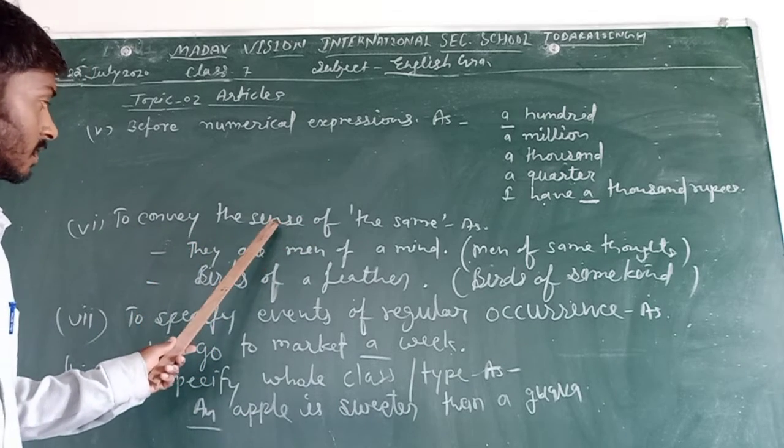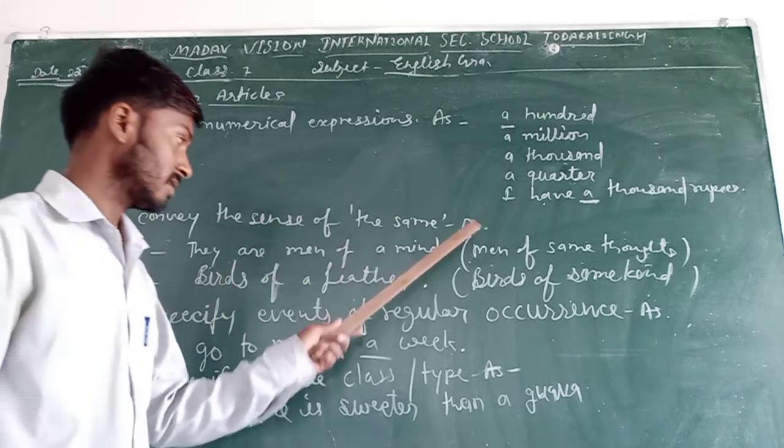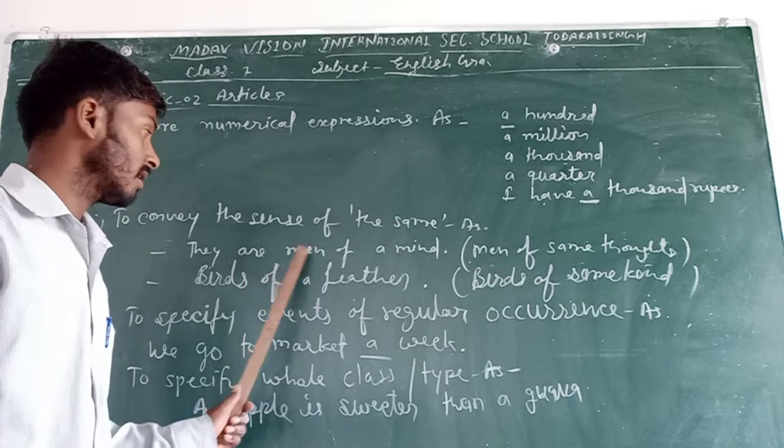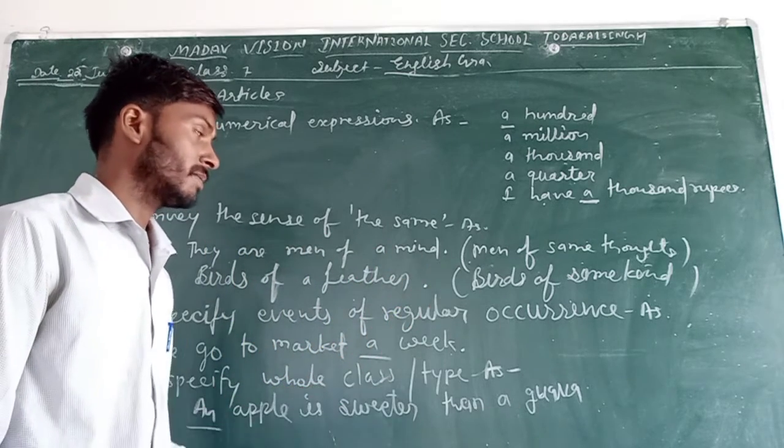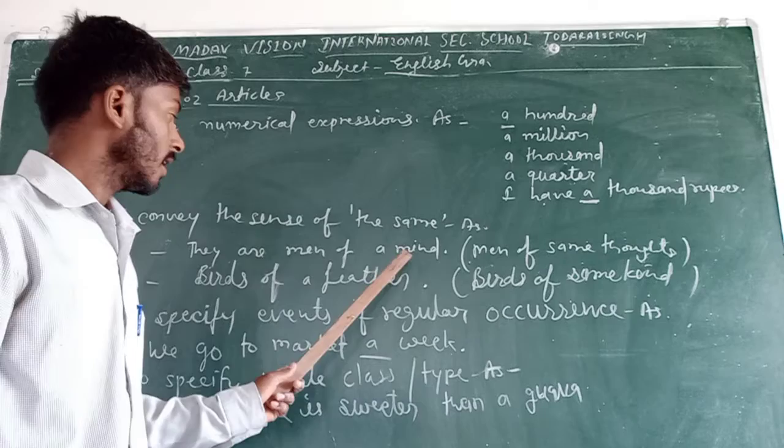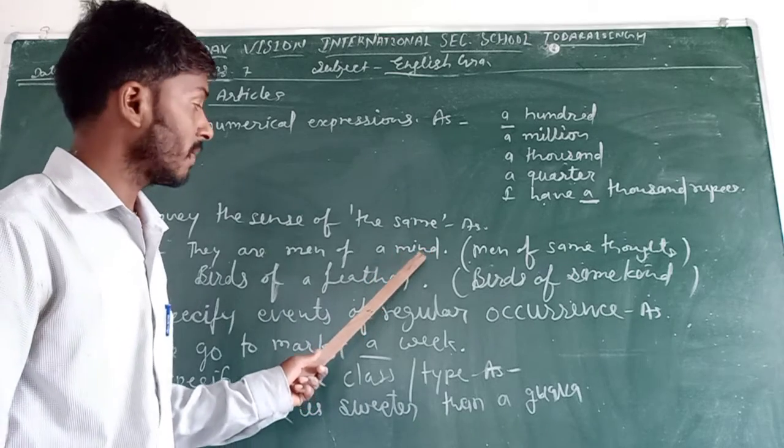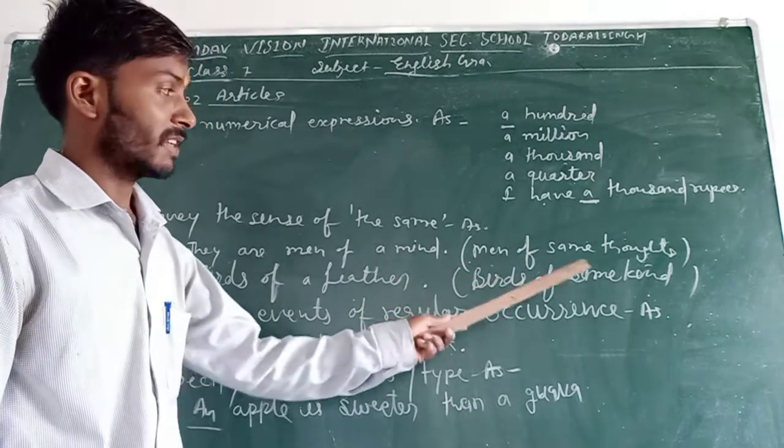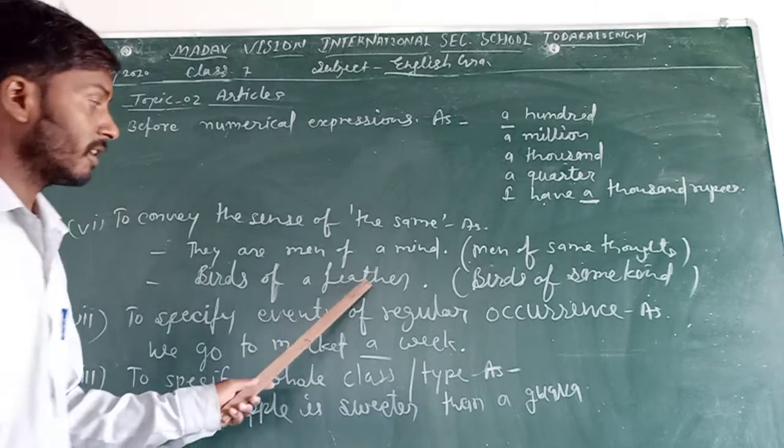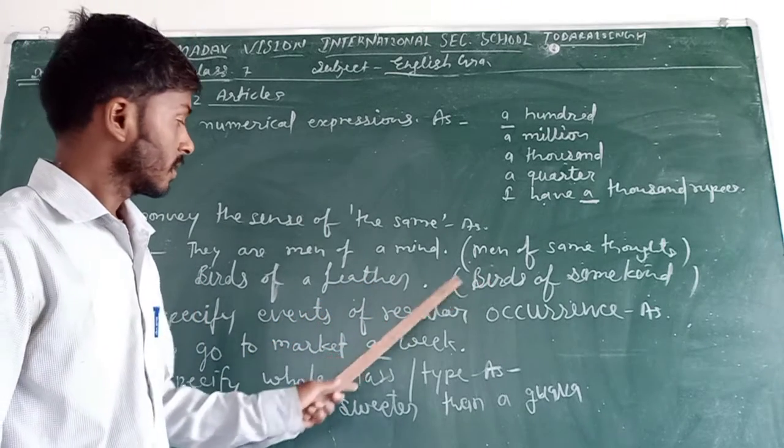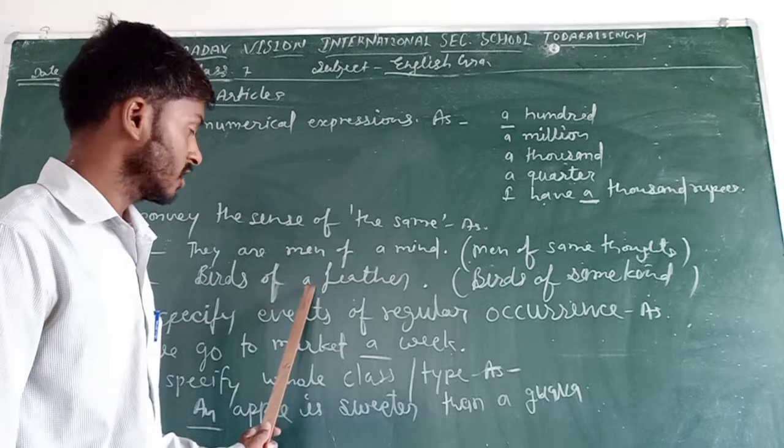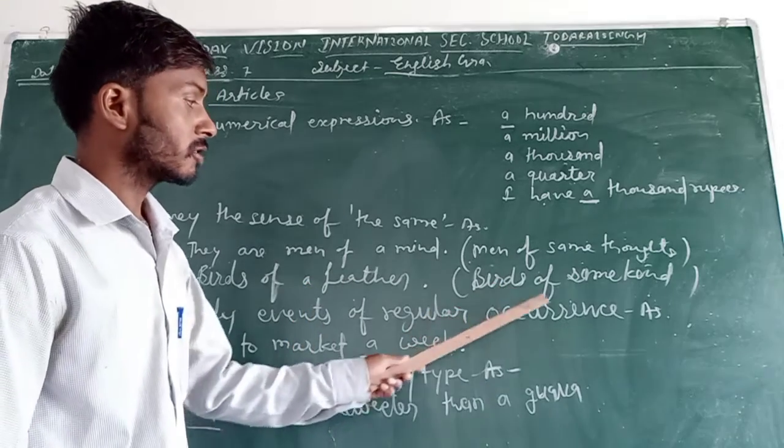To convey the sense of sameness. They are man of a mind. It means A is used before mind, it means man of some thoughts. Birth of a freedom. It means A is used here, birth of some kind.